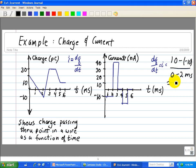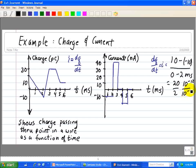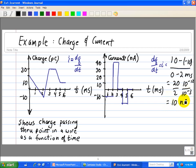Okay, which is equal to 20 divided by 2. This is in picocoulombs, so that's 10 to the minus 12 here in the numerator. And 10 to the minus 3, which is basically 10 nanoamps. So our first part is minus 10 nanoamps going from 0 to 2 milliseconds. So that's our negative slope.